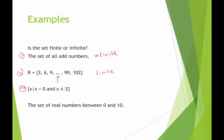In this third one, we have {x | x < 0 and x ∈ Z}. That Z means integer. Are there integers less than 0? Yes, there are. Are there a finite or infinite number? There are an infinite number. They just keep going.